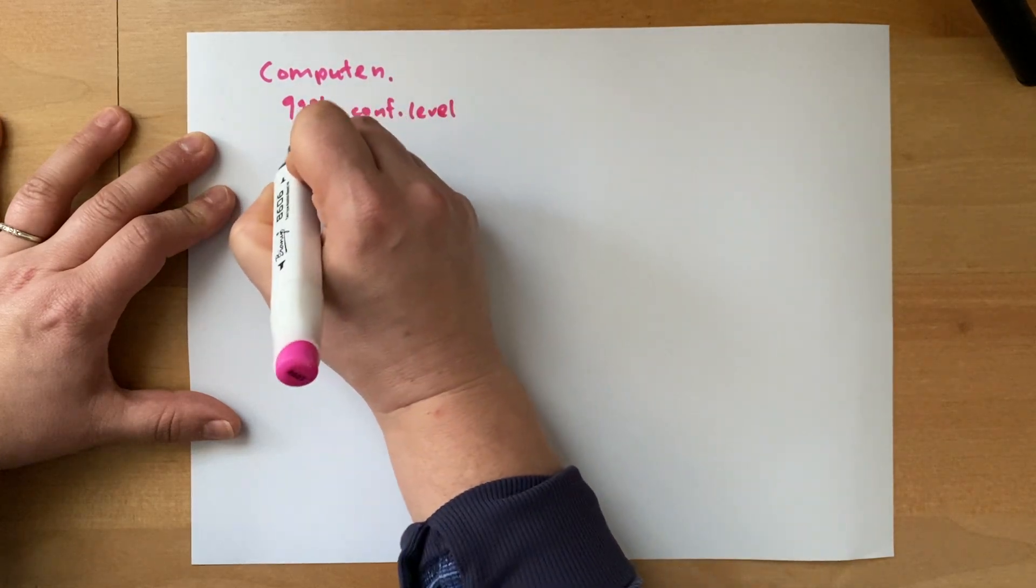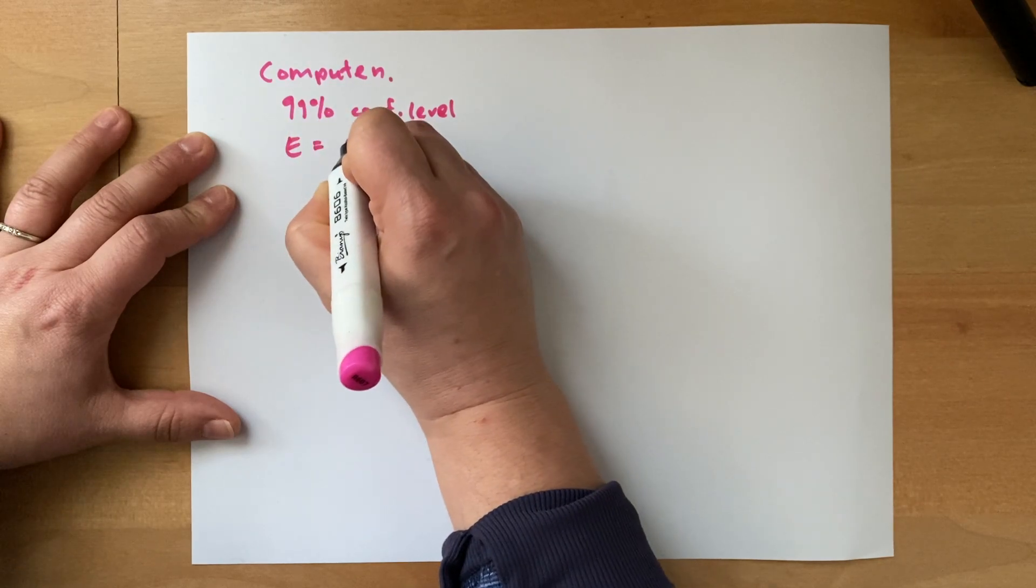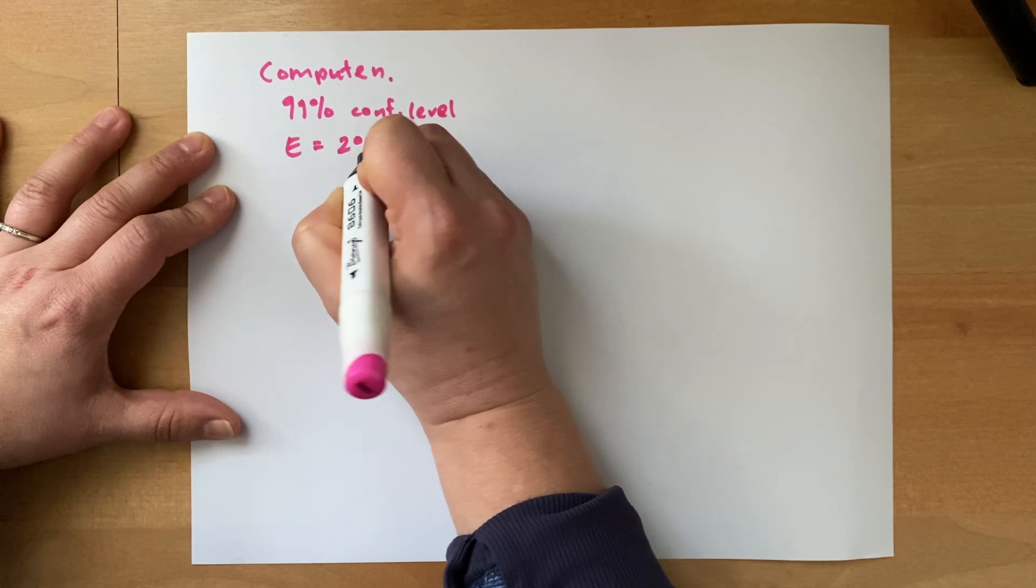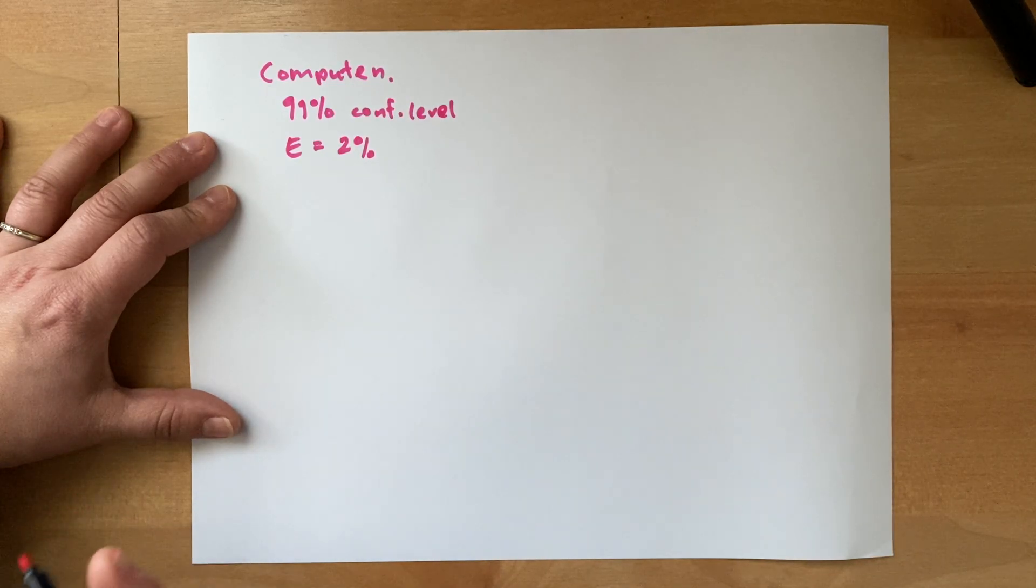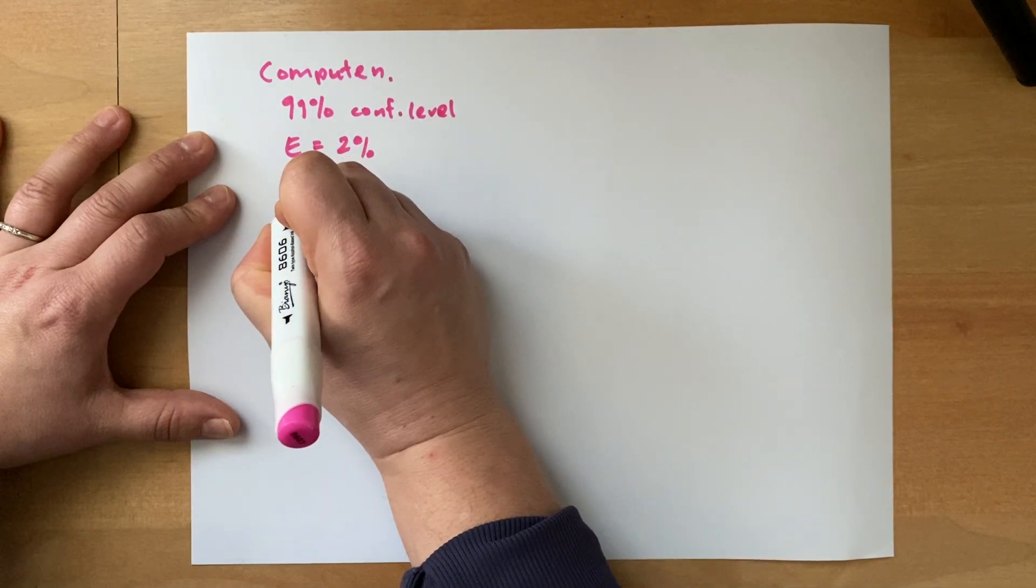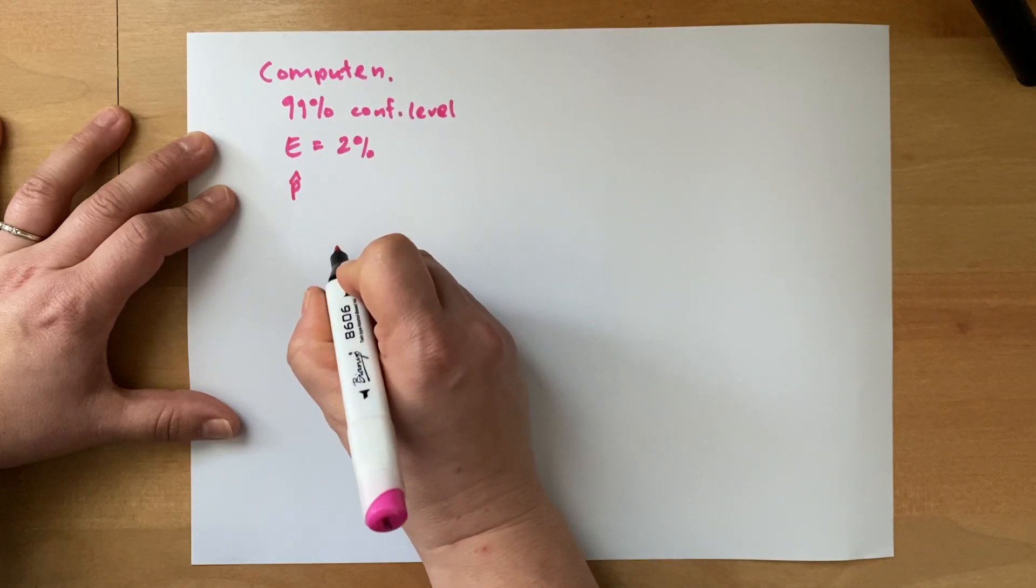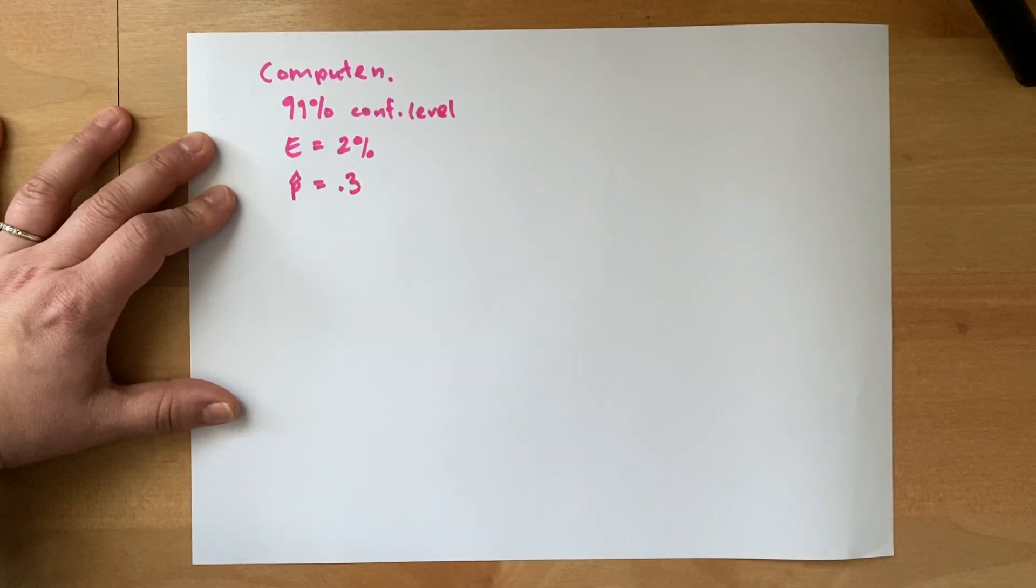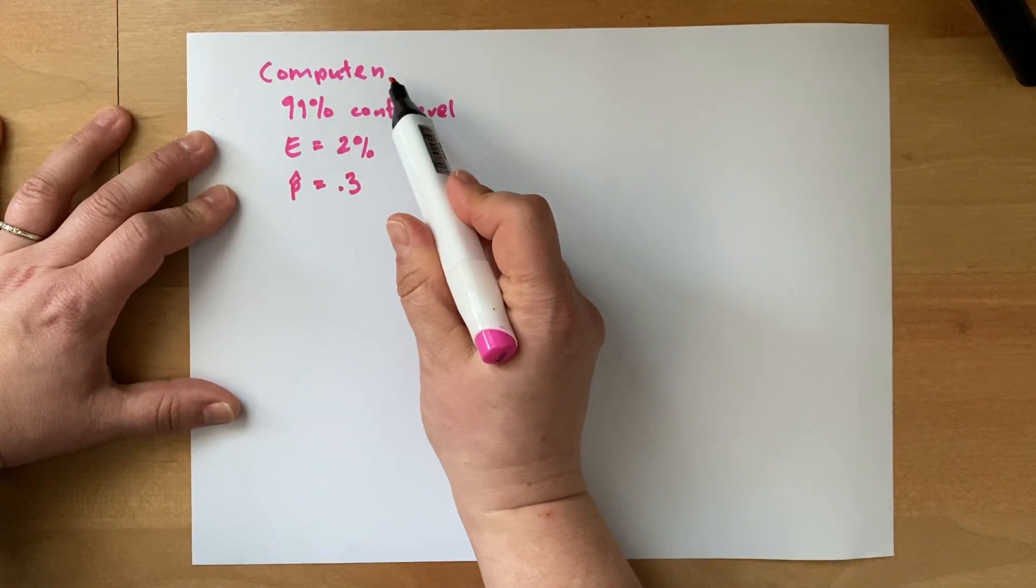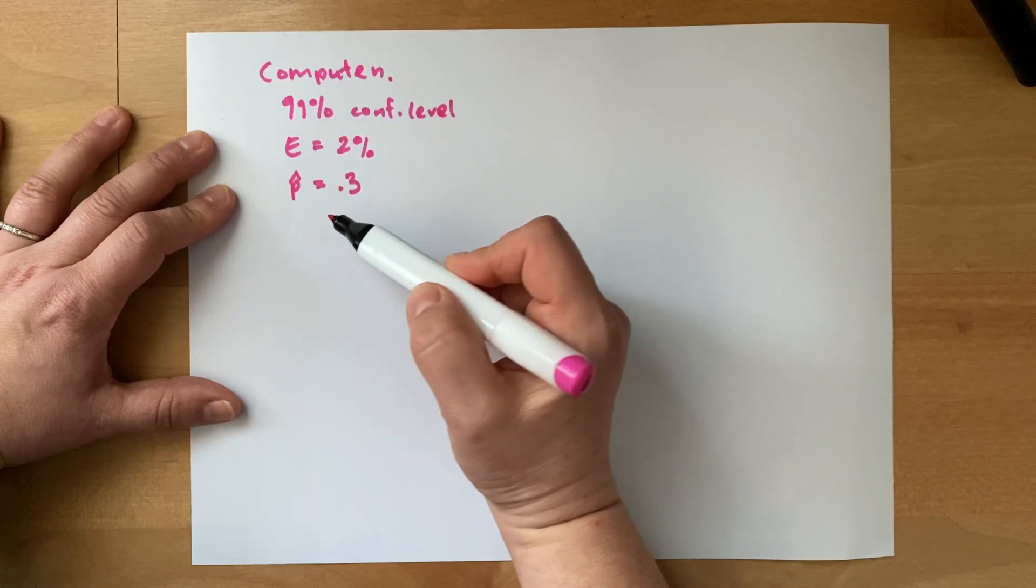We need to have a margin of error that's specified at, I don't know, let's say 2% in this example, and somehow we know that maybe through a prior study that there is a value for your sample proportion that is 0.3. So our goal is to compute n and we have all these facts.